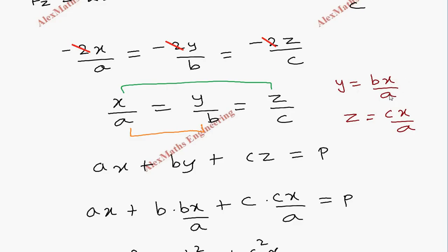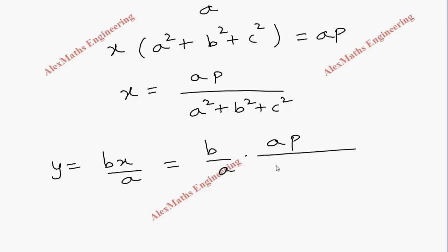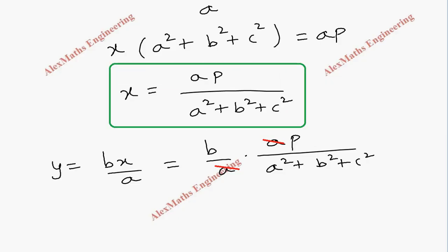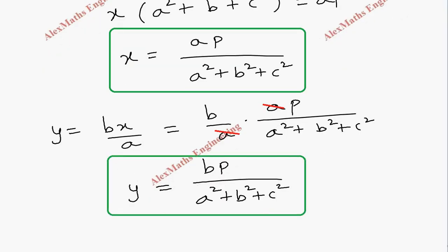When we substitute the value of x to get y: y equals b times x by a, so y equals b by a into ap by (a square plus b square plus c square). Cancelling a, we get y equals bp by (a square plus b square plus c square).